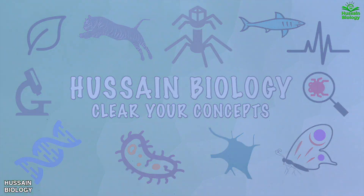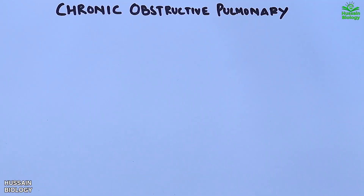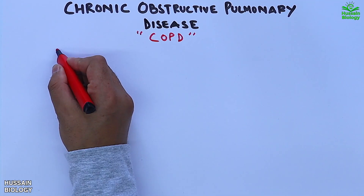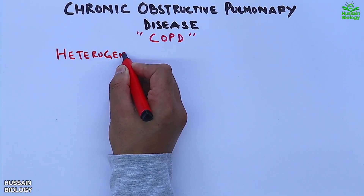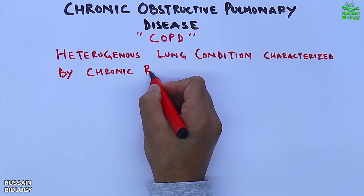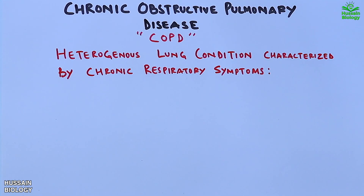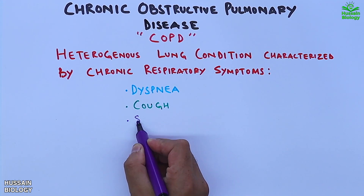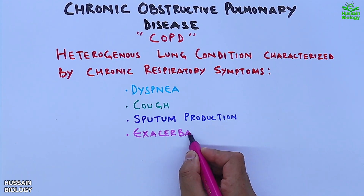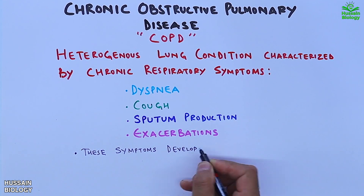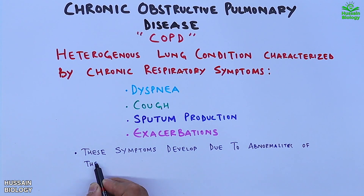In this video we will be discussing chronic obstructive pulmonary disease, that is COPD. It is a heterogeneous lung disease characterized by chronic respiratory symptoms like dyspnea, cough, sputum production and exacerbations. These symptoms develop due to abnormalities of the airways in the lung.